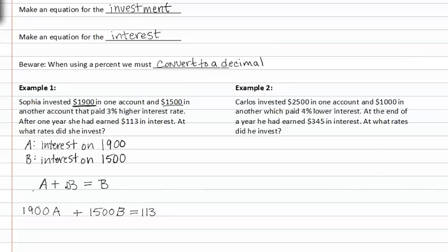If we know that B is actually the same as A plus 3%, we can substitute B with A plus .03. This gives us, 1900 times A plus 1500 times A plus .03 equal to 113.